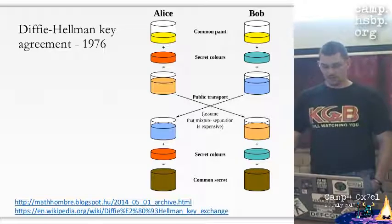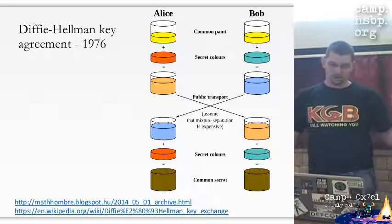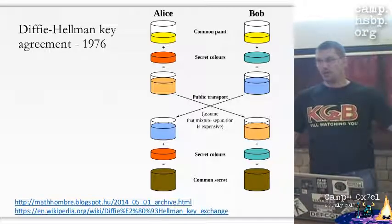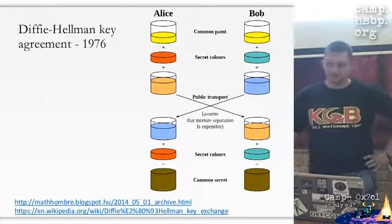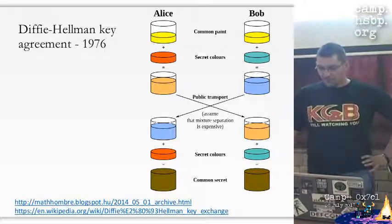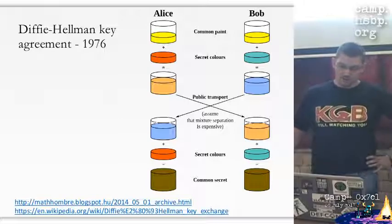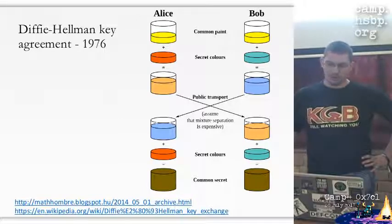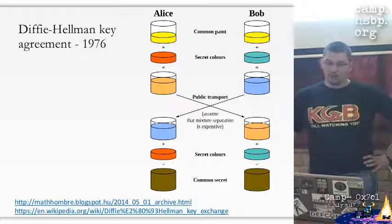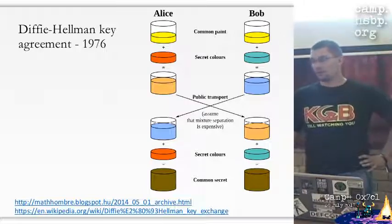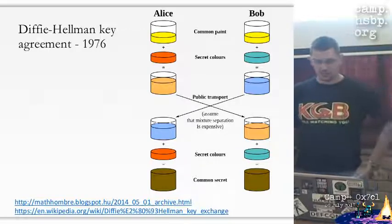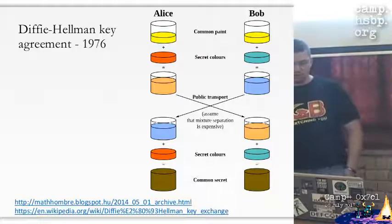They both agree on a common paint - like yellow - and they both choose a secret color, then they mix the common paint and the secret color at home and transport this mixed color publicly. Let's assume it is very hard to extract the original color even if you know the common paint was yellow. Now that the other party has this mixture, if they mix it with their own color, they get the same shared color, which can be used as a secret - for example as an AES key. This is very old, more than 40 years old.